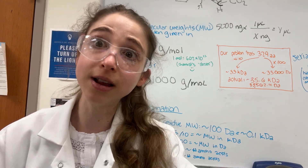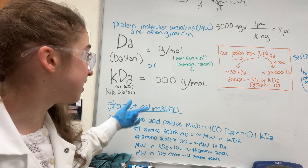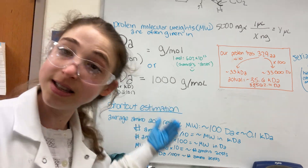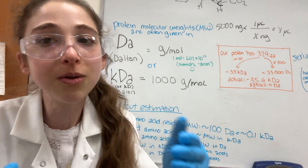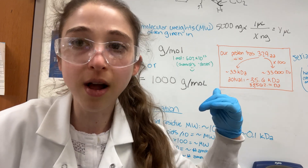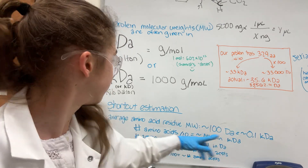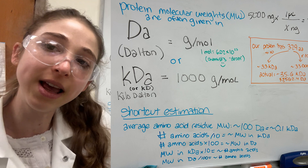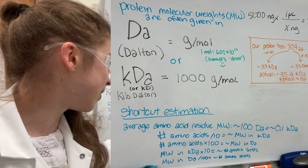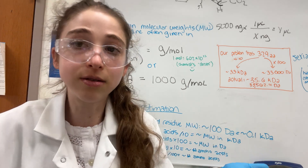A 30 kilodalton protein is bigger than a 15 kilodalton protein but smaller than a 60 kilodalton protein. You can estimate from amino acids to kilodaltons or Daltons and vice versa, because the average amino acid residue molecular weight is about 100 Daltons or 0.1 kilodaltons. When amino acids join together they lose part of their termini, so residue weight is slightly smaller — but it's just an approximation. Number of amino acids divided by 10 gives molecular weight in kilodaltons; times 100 gives Daltons. Molecular weight in kilodaltons times 10 gives number of amino acids; molecular weight in Daltons divided by 100 gives number of amino acids.